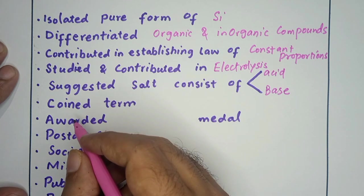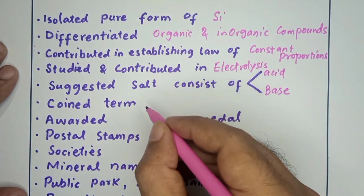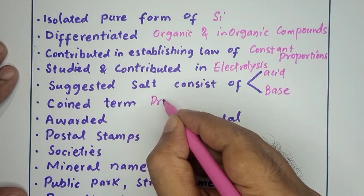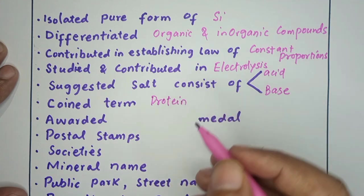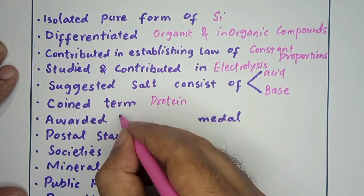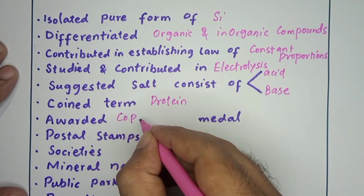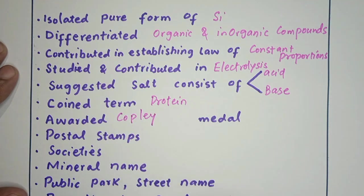He got a Copley Award in England. He is a very prestigious scientist. He is recognized on postal stamps in different countries, especially Sweden. There are many societies that are named Jacob Berzelius. There is a mineral that is named Jacob Berzelius.